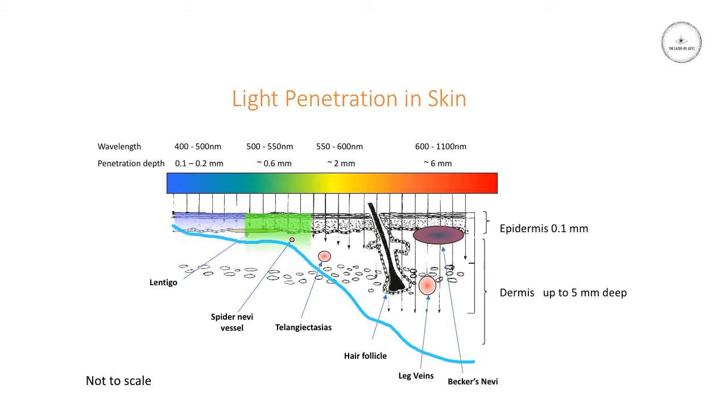Green light can penetrate a little bit further, so it can be used for some epidermal pigmented lesions and also for some spidonevi type vessels, because green is fairly well absorbed in hemoglobin in the blood.